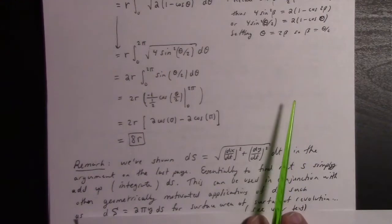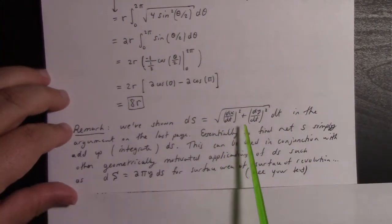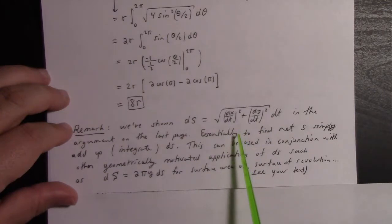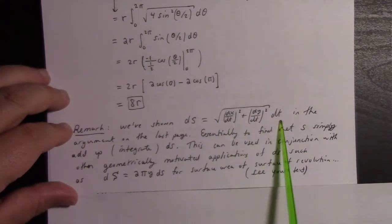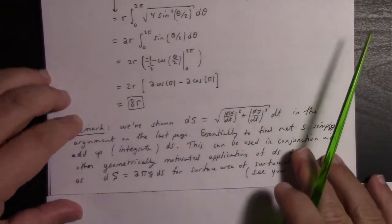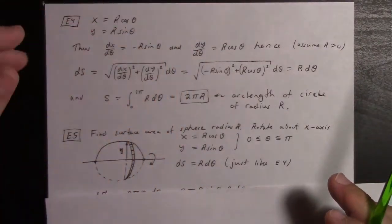Let's summarize what we've done. We've basically shown that ds is √((dx/dt)² + (dy/dt)²)dt in the argument on the last page. We can use this idea of ds written in terms of this for a parametrized curve. It's very useful to set up other things, like the surface area integral.